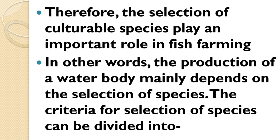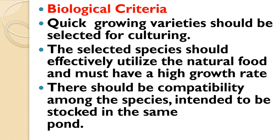Therefore, the selection of culturable species plays an important role in fish farming. In other words, the production of a water body mainly depends on the selection of species. The criteria for the selection of species can be divided into two: first, biological criteria.